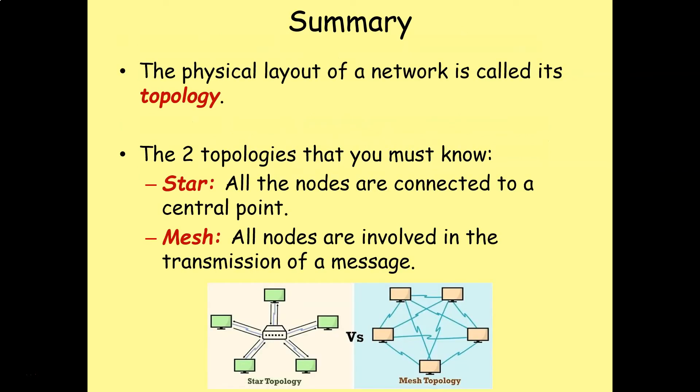In summary, the physical layout of a network is called its topology. The two topologies that you have to study for this level are the star topology, where all the nodes are connected to a central point, and the mesh topology, where all nodes are involved in the transmission of a message.